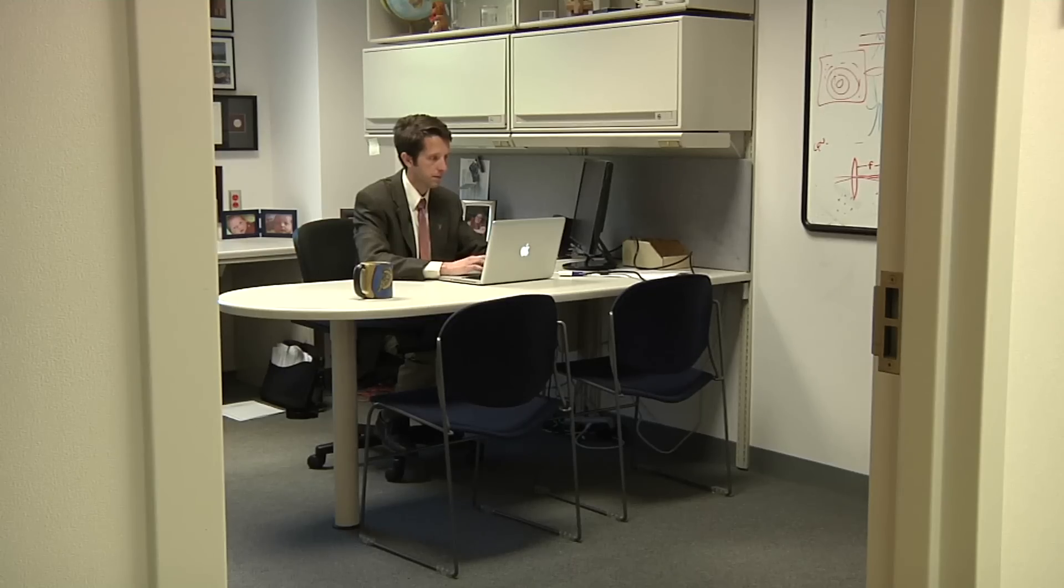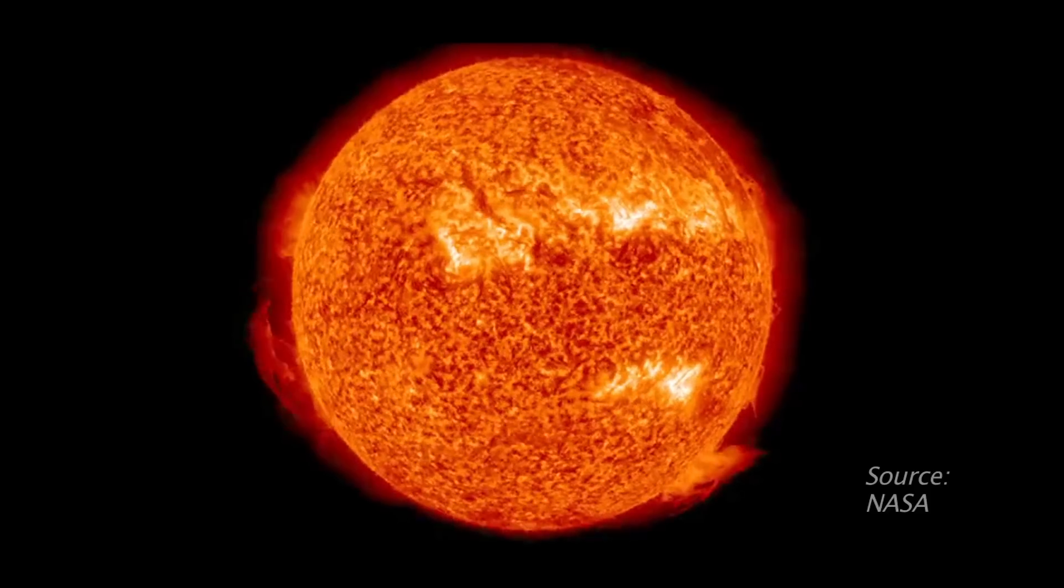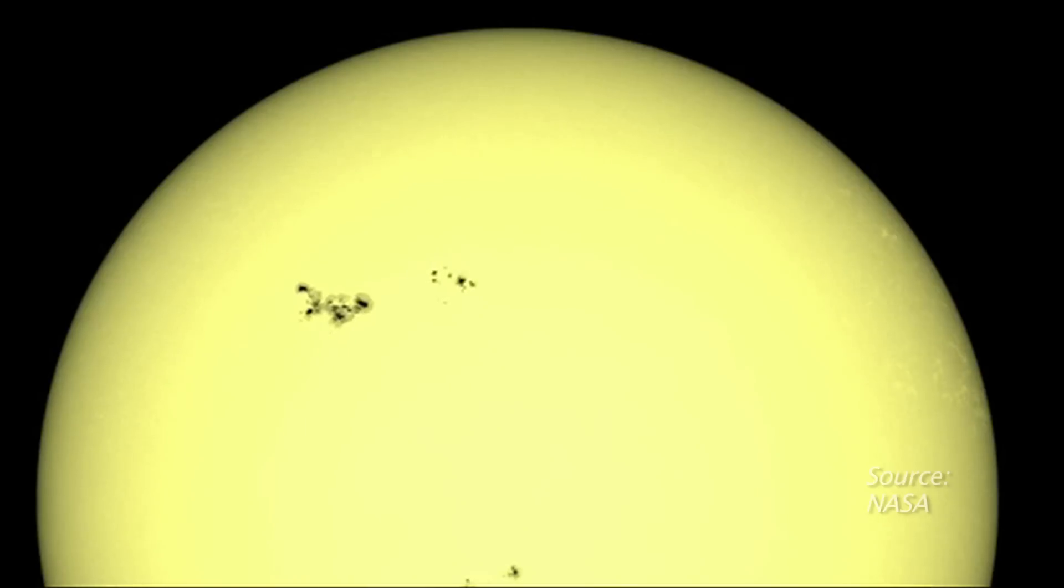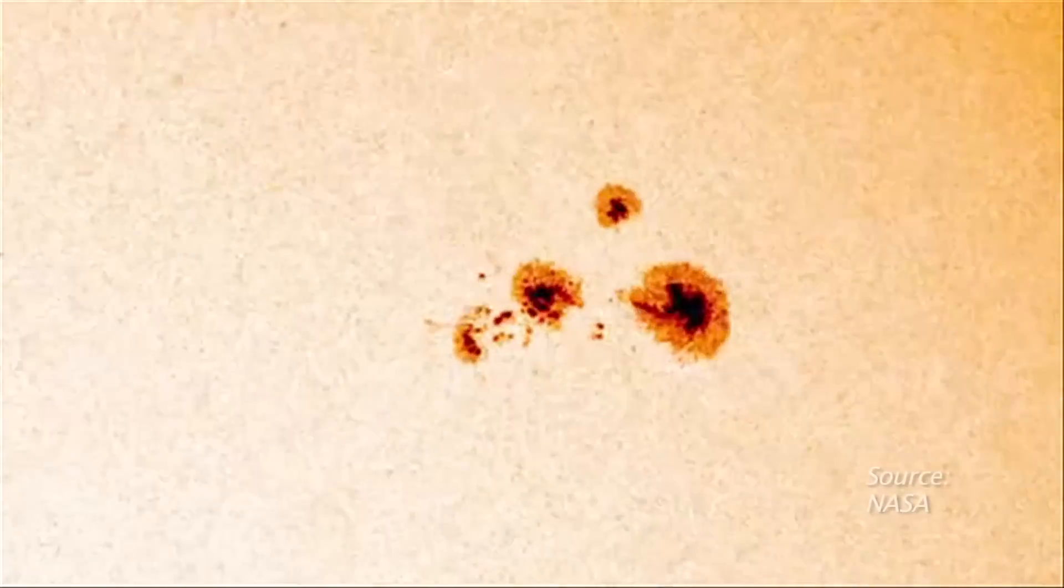Scientists develop a space weather forecast by studying the surface of the sun, looking for dark splotches of magnetic energy called sunspots. More sunspots mean more solar flares.